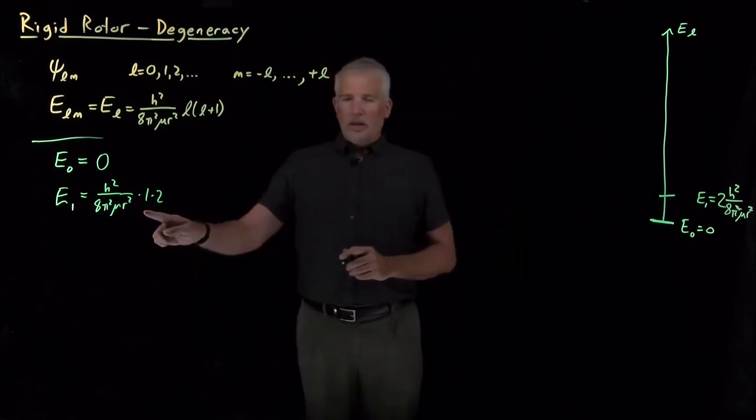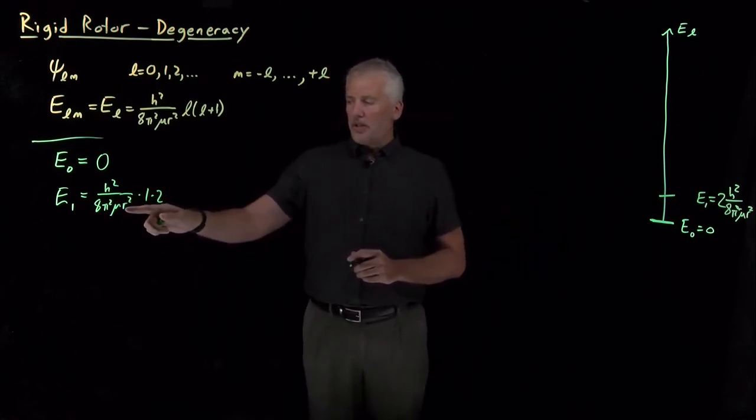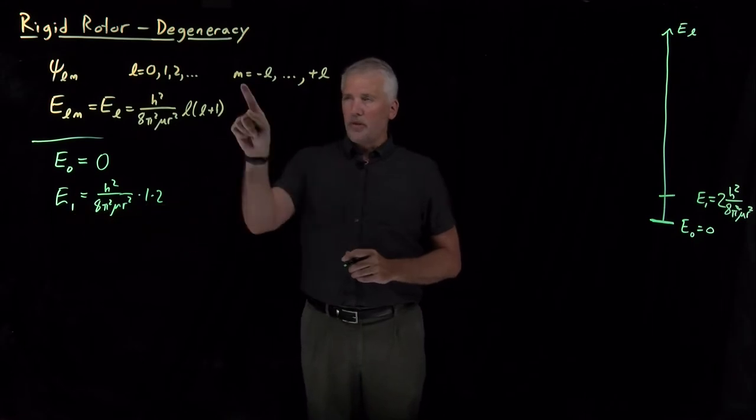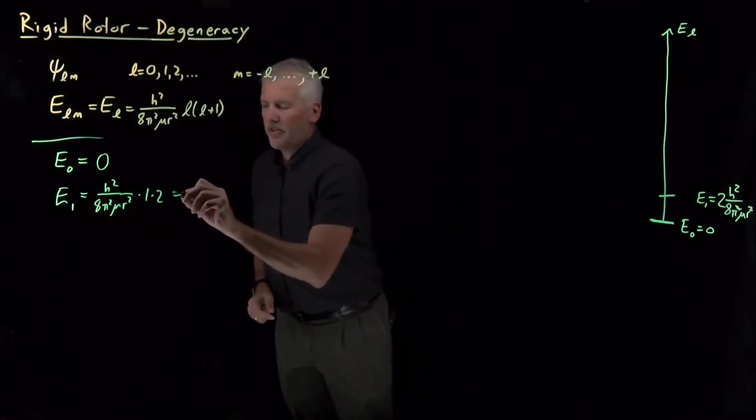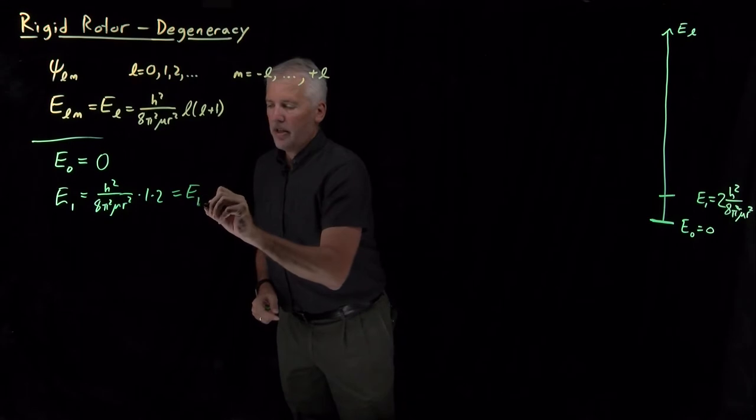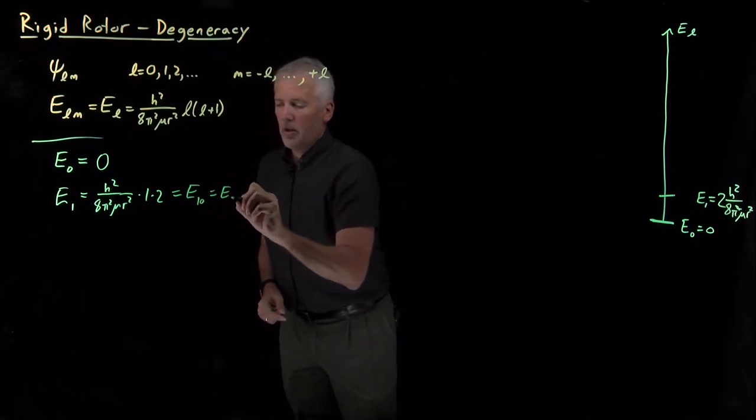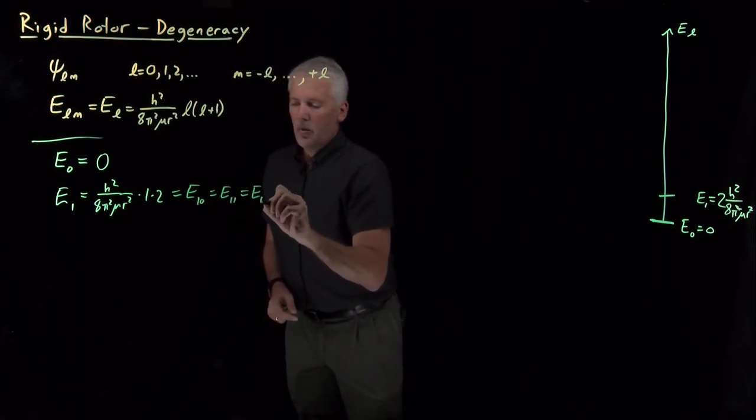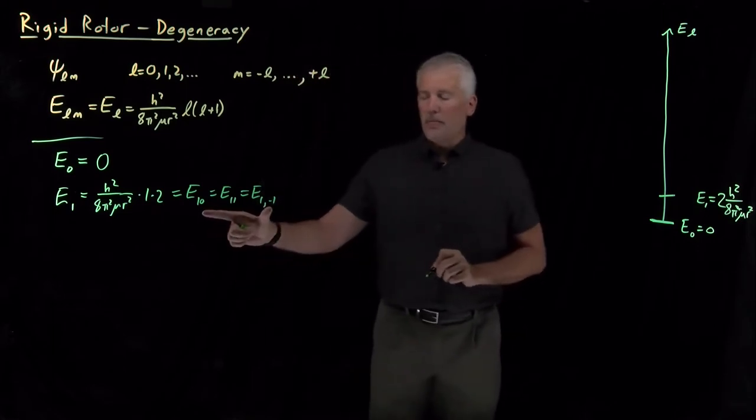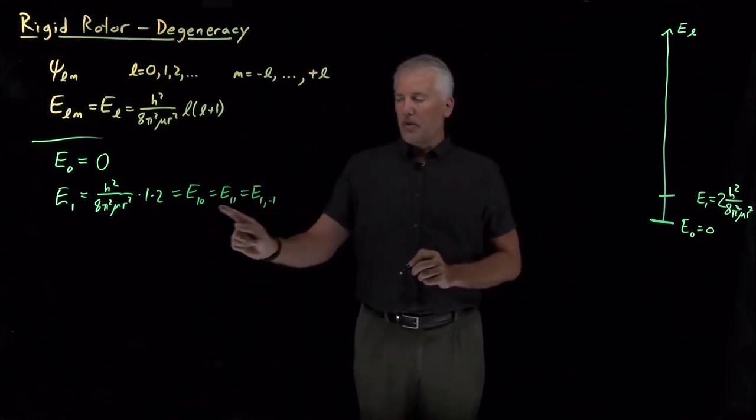But there's one other thing to pay attention to with this energy level, the L equals 1 energy level, the M values. This is the energy of E₁,₀, or E₁,₁, or E₁,₋₁. Those are the three possible values of M: M equals negative 1, or 0, or 1, that obey this rule for what the magnetic quantum number can be.